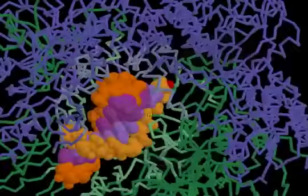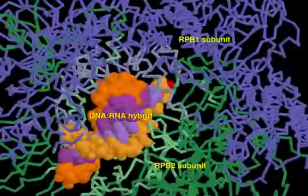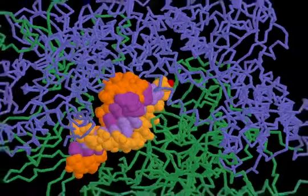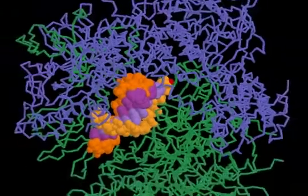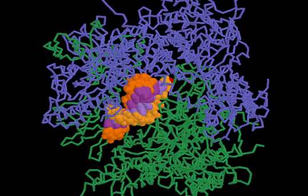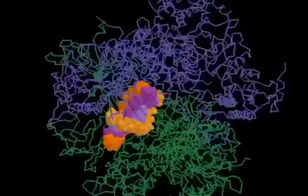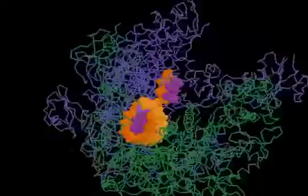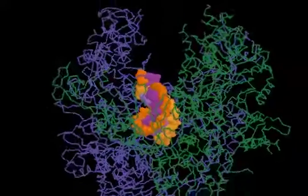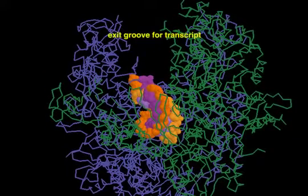In the active site of RNA polymerase II, a single-stranded DNA template is transcribed into a complementary RNA transcript. The initial product is a DNA-RNA hybrid from which the newly synthesized RNA strand is stripped off. It leaves the polymerase via an exit groove on the protein surface.